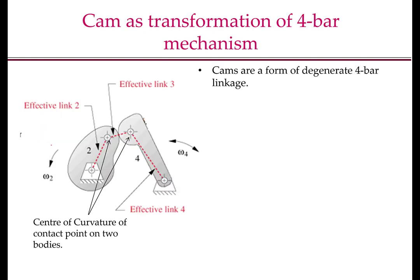Let us first understand the degrees of freedom of a cam follower system. As you will see here, there are three links. The cam is one link, the follower is another link, and the ground is link 1. So L equals 3. There are two 1-degree-of-freedom joints, one between the cam and the ground, the other between the follower and the ground. There is one 2-degree-of-freedom joint between the cam and the follower. So J2 equals 1.